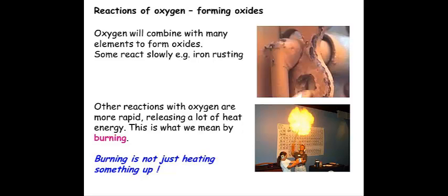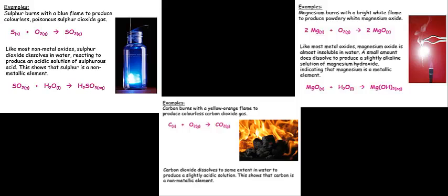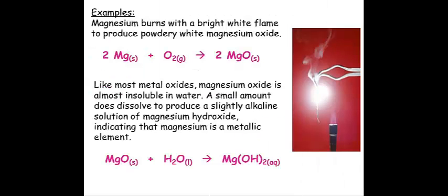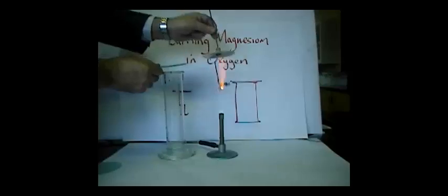Oxygen combines with many elements to form oxides, for example iron oxide, sulfur dioxide, carbon dioxide, magnesium oxide. Elements that burn in air can also be burned in pure oxygen, and reactions can be compared.